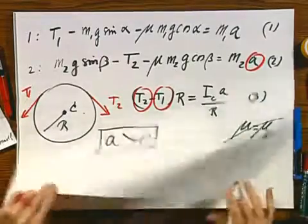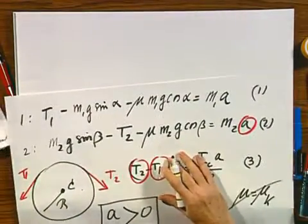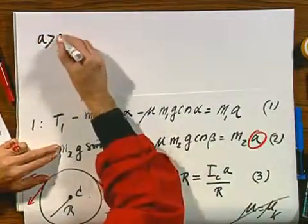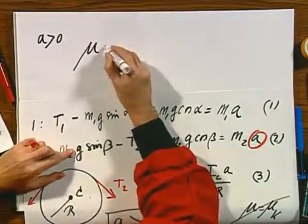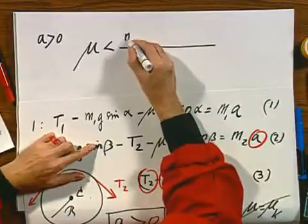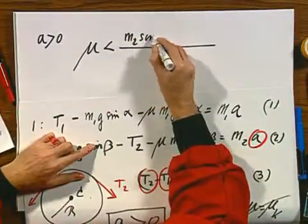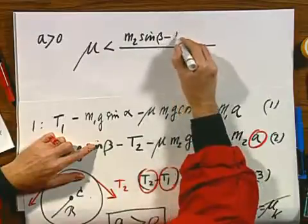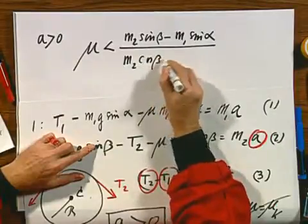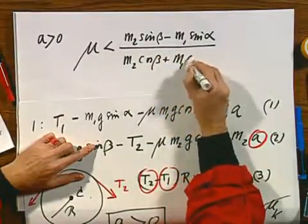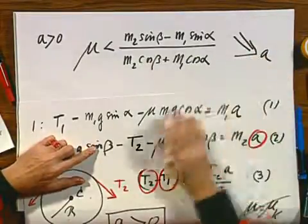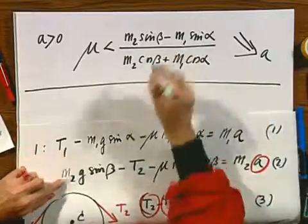Because the directions of the frictional force, I have adjusted in such a way that it's only correct if indeed the acceleration is that M2 is accelerated downwards. So you solve for A, and A better be larger than zero. If A is not larger than zero, then your solution is wrong. I massaged it a little bit for you. When A is larger than zero, you can express that in terms of mu. And mu then must be smaller than M2 sine beta minus M1 sine alpha divided by M2 cosine beta plus M1 cosine alpha.